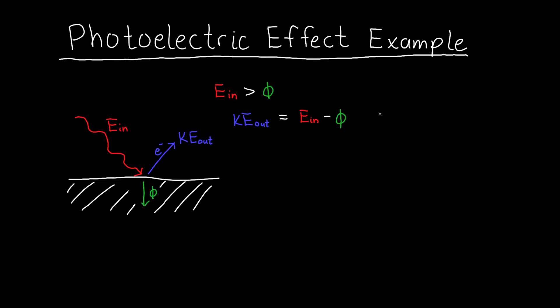And strictly speaking, this is the maximum kinetic energy that we can get out because φ is the minimum energy required, the work function, for us to get electrons out. Some electrons are going to be harder, but no electrons are going to be easier.